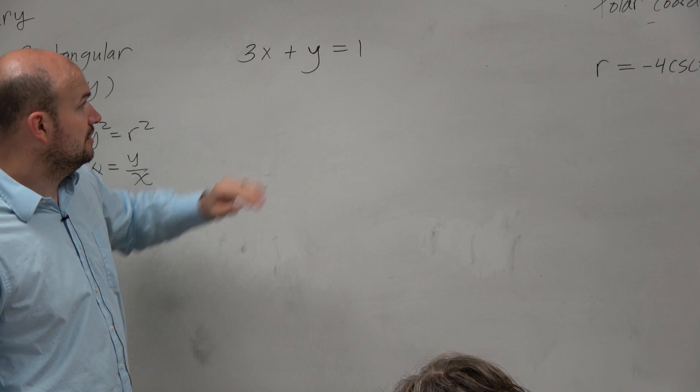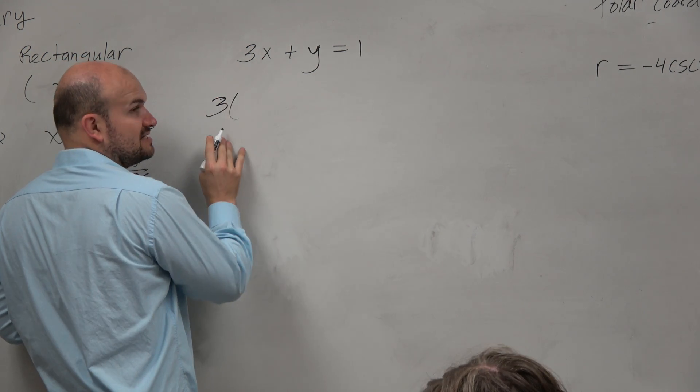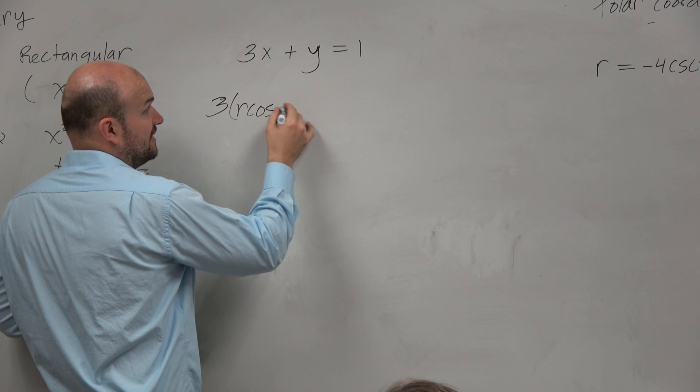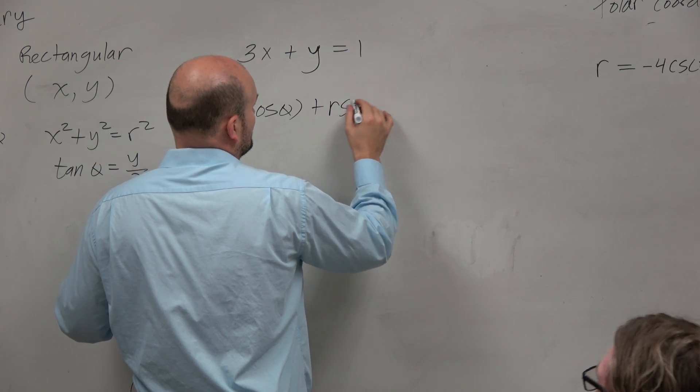So if I want to convert this to polar, would it be legal then for me just to replace x with r cosine of theta? Yes, legal, like passing the speed limit. Plus y to be r sine of theta.